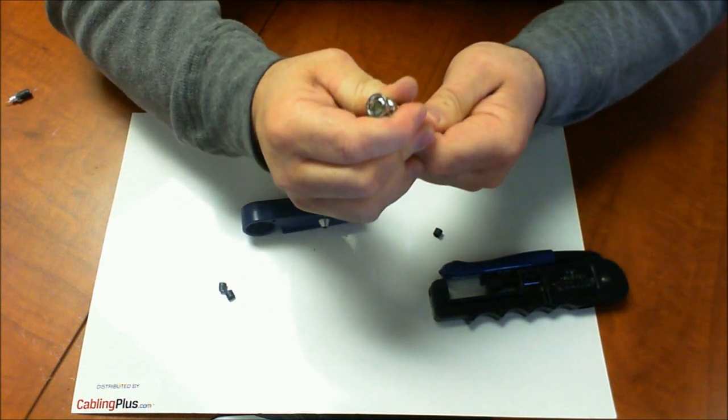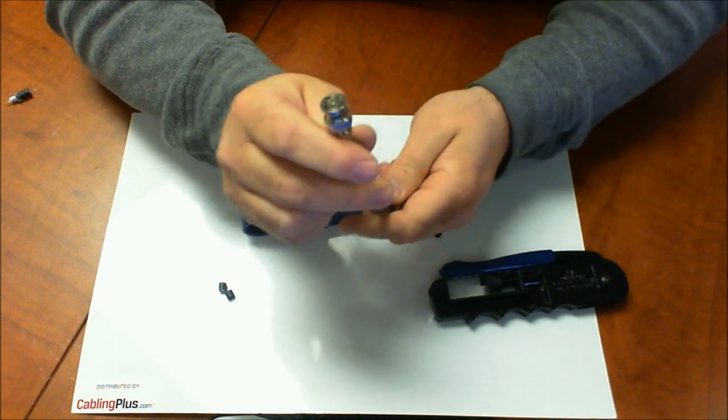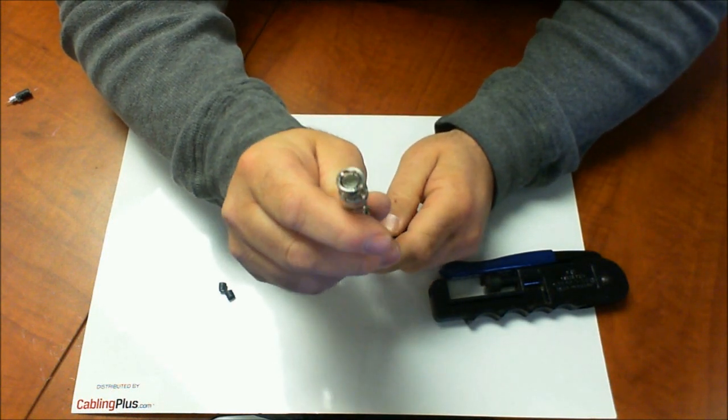Now what you want to do is get that center conductor so it's flush with the top of the BNC. So if you take a look at that, you'll see how it's just flush right there.